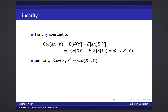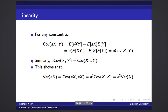The same applies if the constant is in the second coordinate — the computation is identical with Y instead of aX. Applying this to variance: Var(aX) is the covariance of aX with itself. We can pull the a out of the first coordinate, giving a times Cov(X, aX), then pull it out of the second coordinate, yielding a² times Cov(X, X), which is a² times Var(X). This is why the constant comes out squared — it's pulled from two coordinates in the covariance.